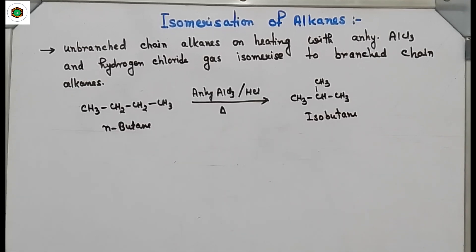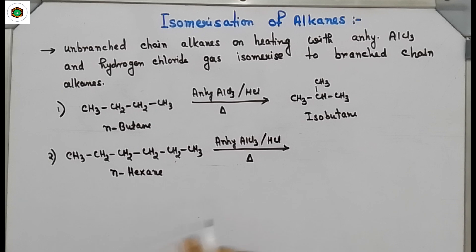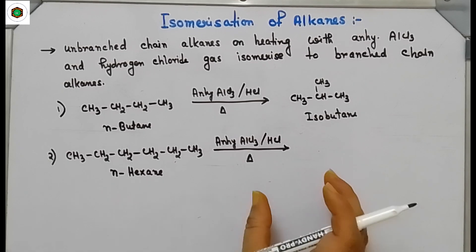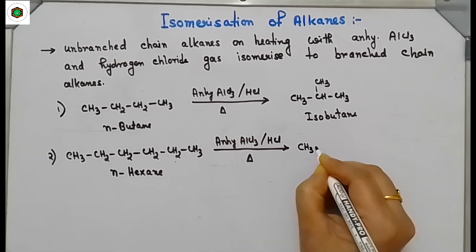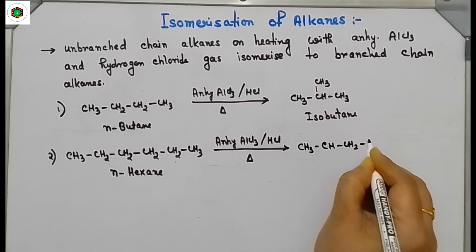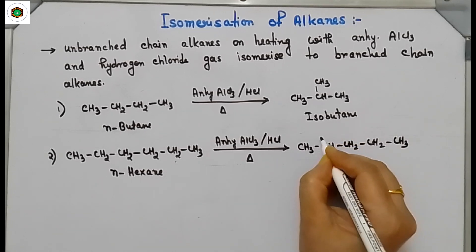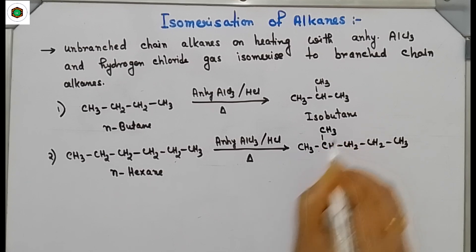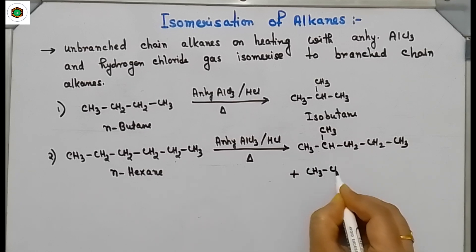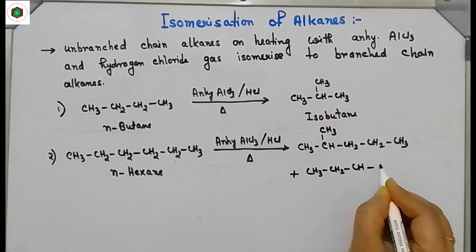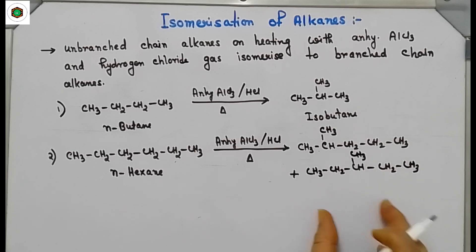Similarly, take N-hexane. On similar treatment with anhydrous aluminum chloride and HCl gas, it gives branched chain alkane isomers. Here six carbon atoms are present, so in the main chain first write five carbon atoms. The one remaining carbon is added as a methyl alkyl group — this gives 2-methylpentane. Once again, write a main chain with five carbon atoms and add a methyl group at position three — this gives 3-methylpentane.